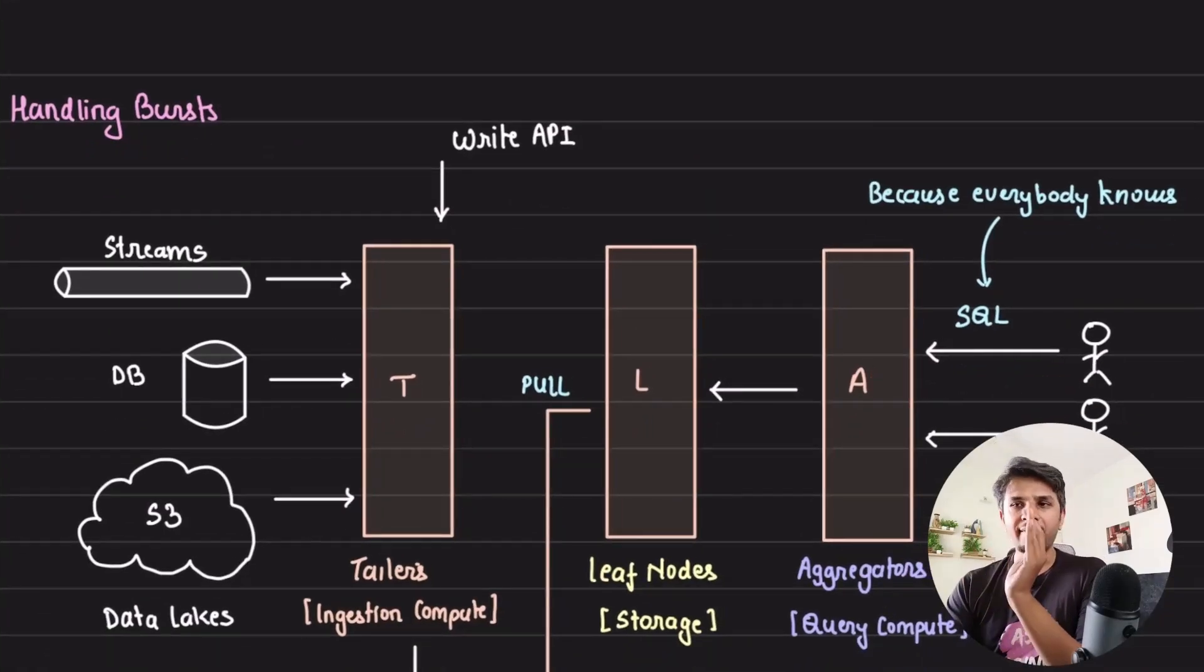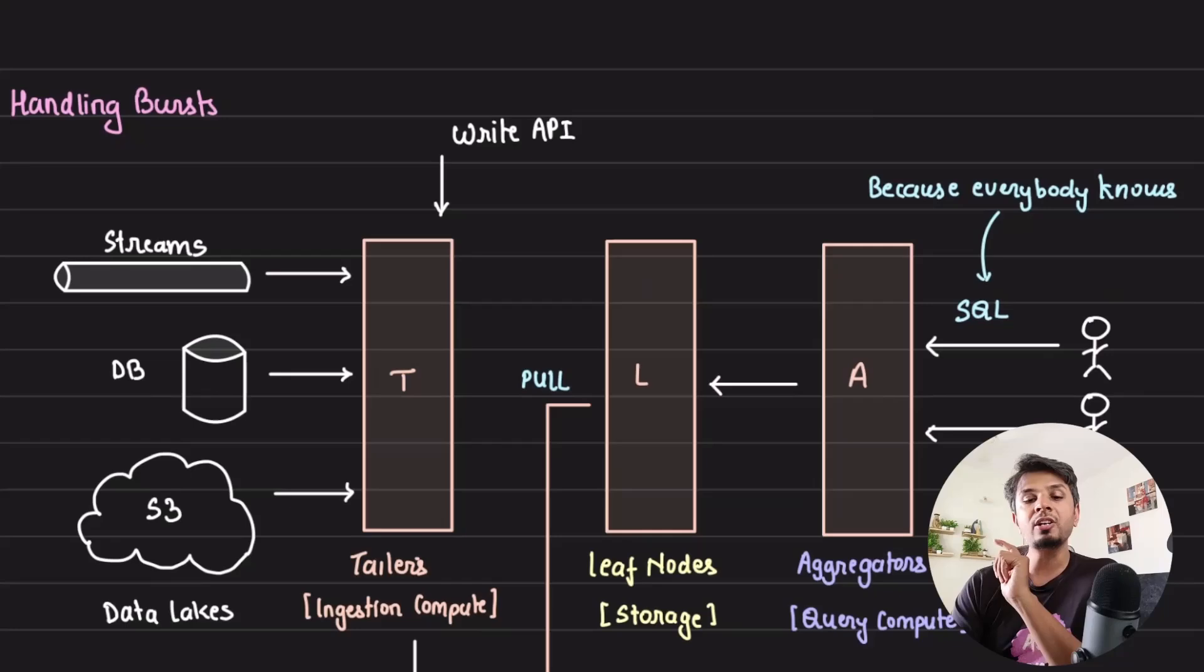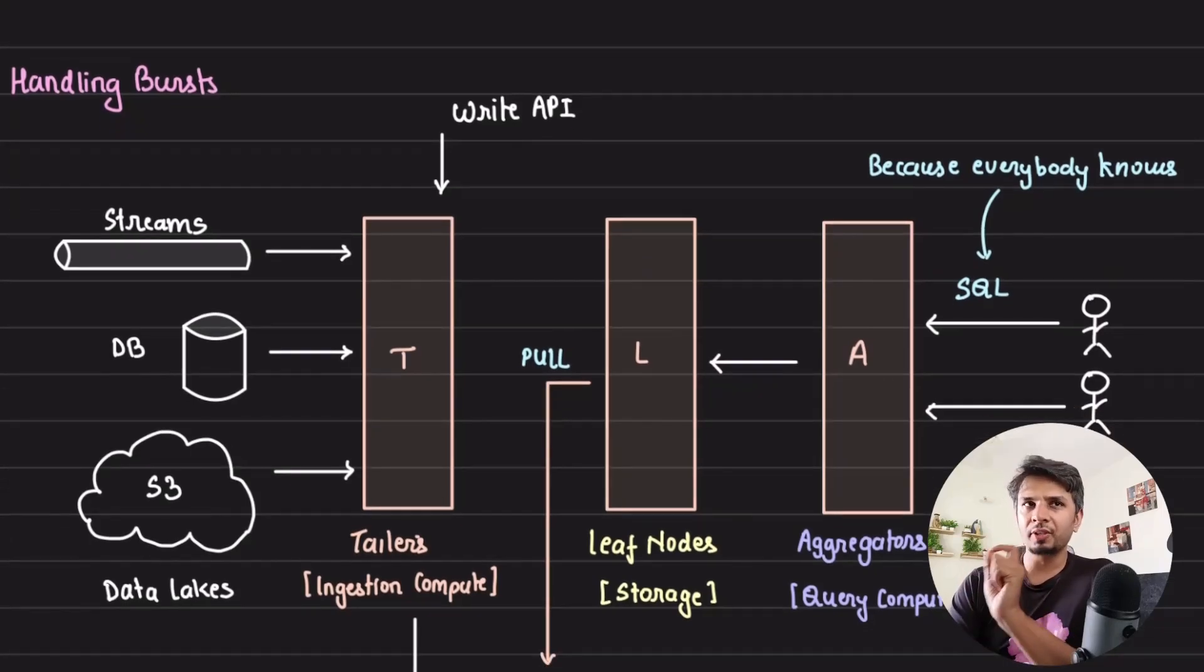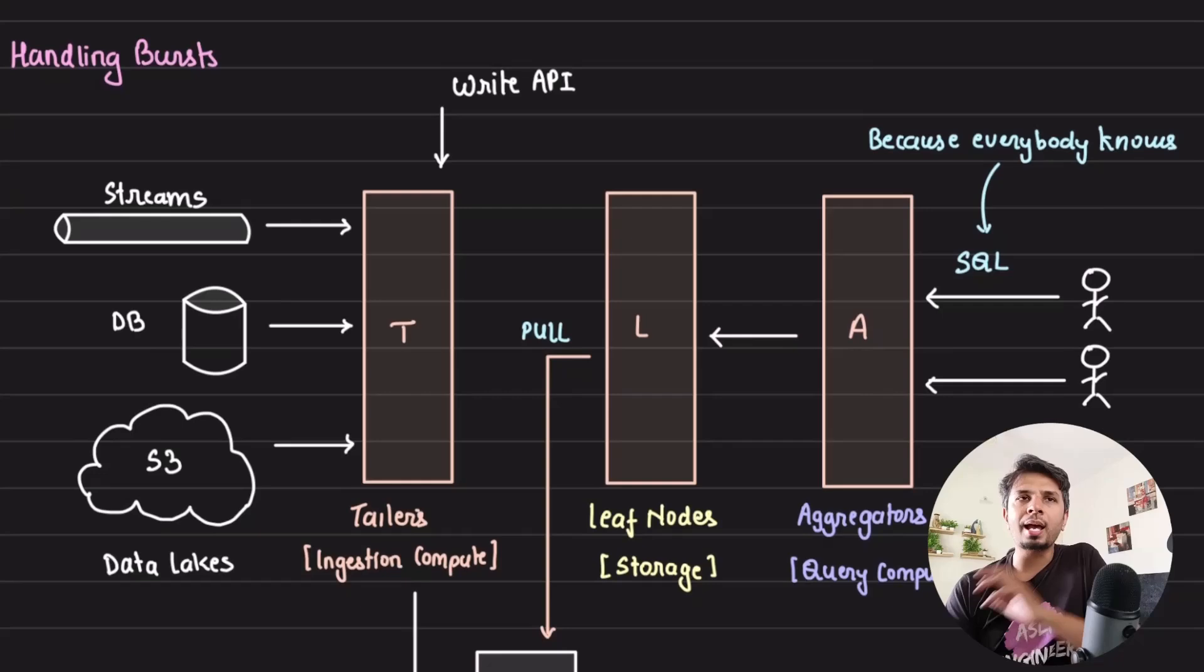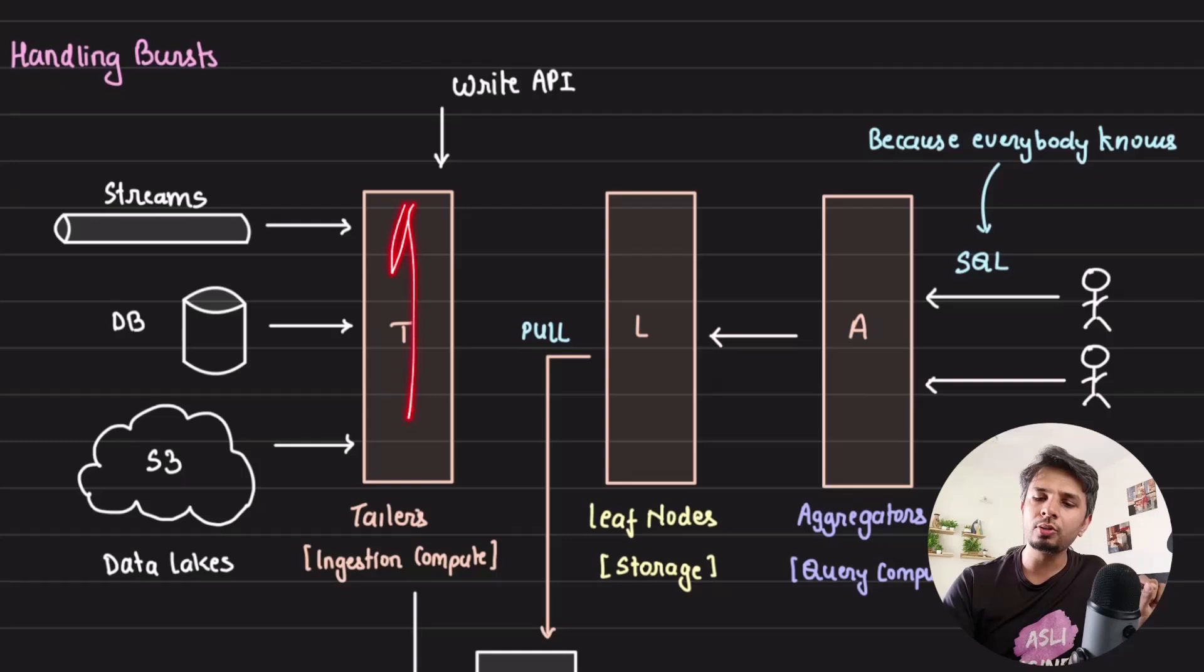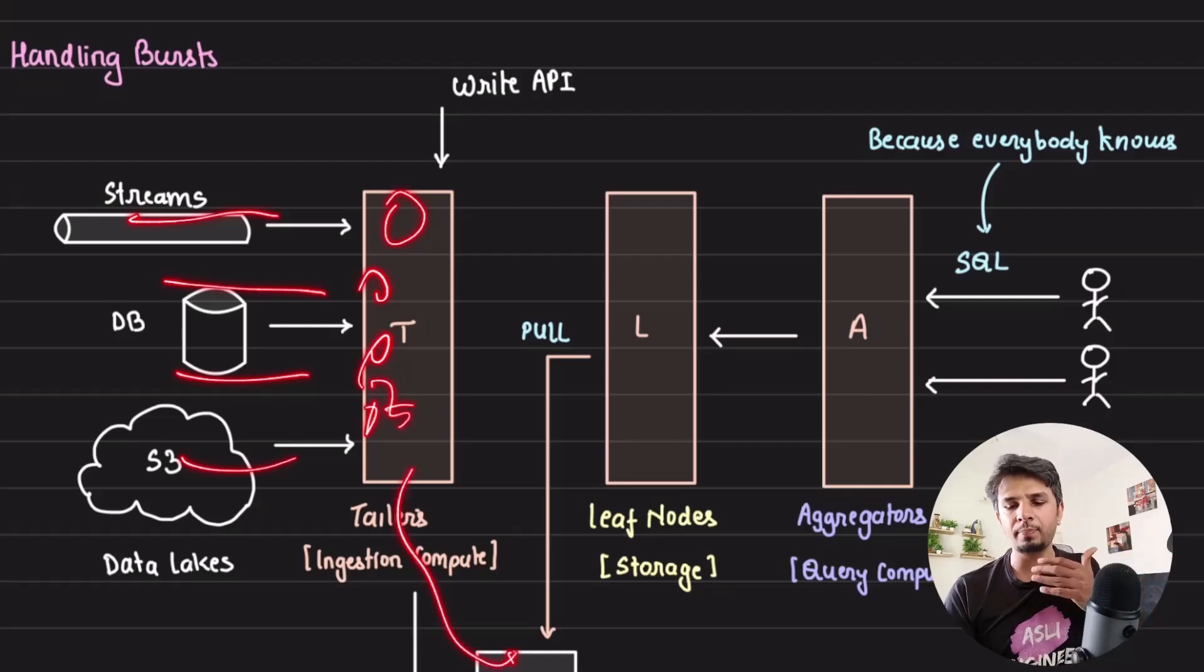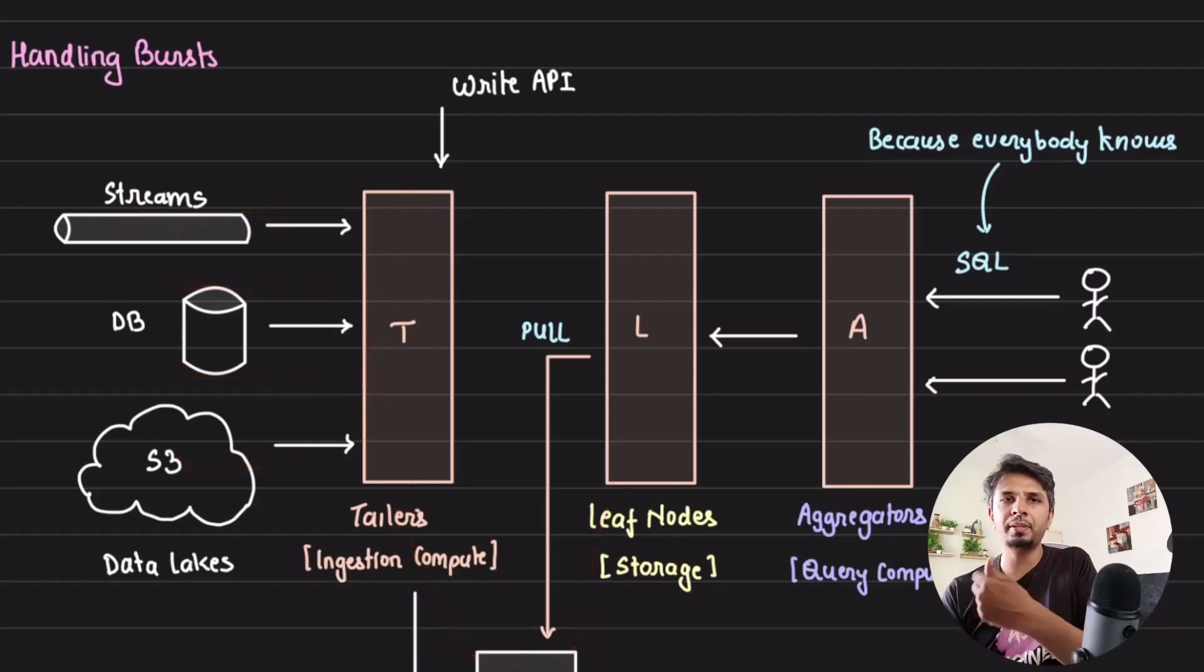The good part about having these very well-defined boundaries of responsibility is that it can handle bursts with ease. For example, given that you have an architecture like this, imagine if you have a very large burst of data to be ingested in a short amount of time. All you need to do is scale up your tailors. Because if you have a large amount of data to be ingested, just add more nodes to it, which would take the data, put it into the distributed log, and now it can be slowly consumed by your leaf nodes.